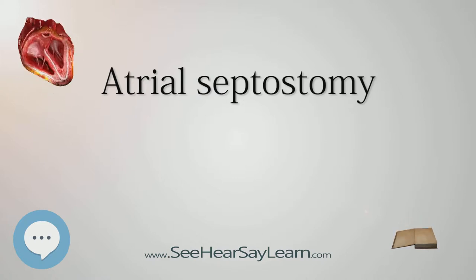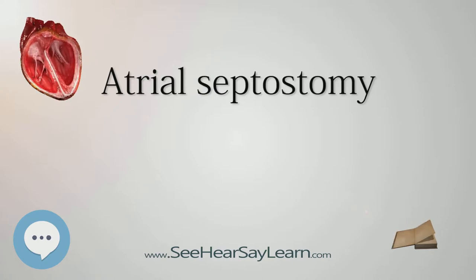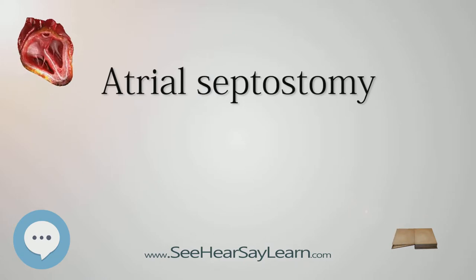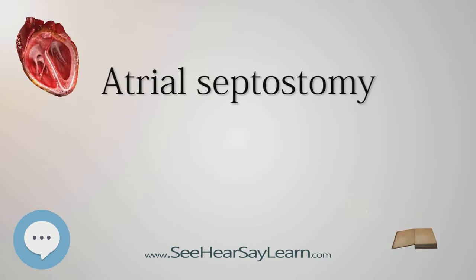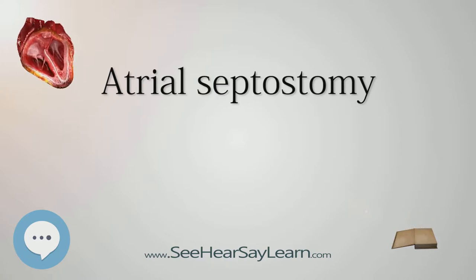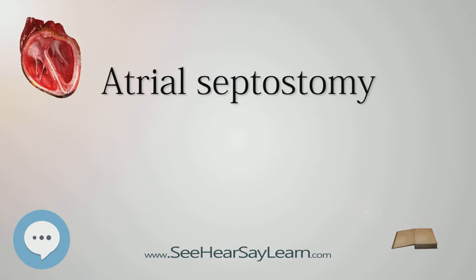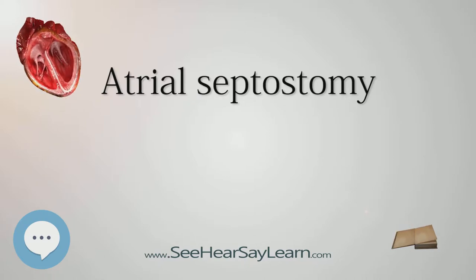With DTGA, certain major blood vessels are connected improperly, so oxygen-poor blood from the right heart is pumped immediately through the aorta and circulated to the body and the heart itself, bypassing the lungs altogether, while the left heart pumps oxygen-rich blood continuously back into the lungs through the pulmonary artery. This is a life-threatening situation due to the resultant low oxygen levels throughout the body.